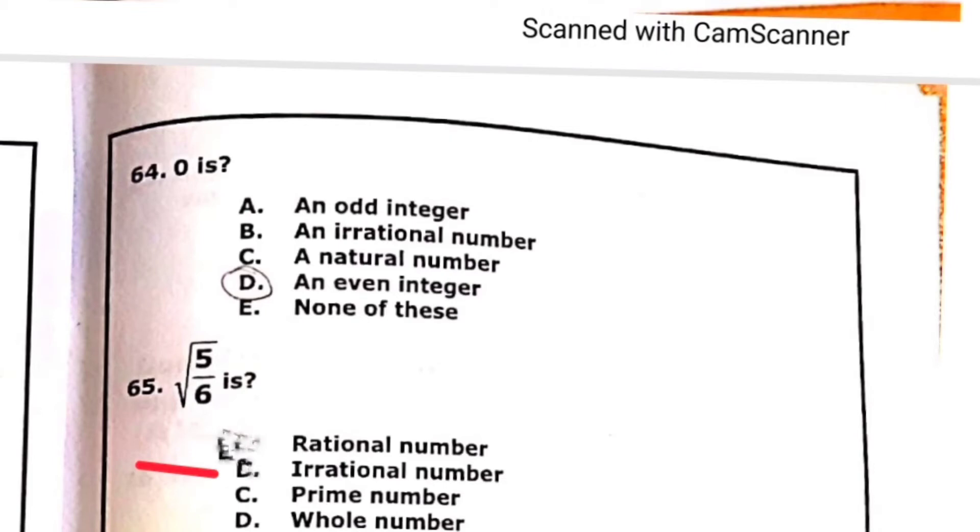65: 5 over 6 square root. Basically 5 over 6 is equal to 0.8333, but when we take the square root then it gives the answer irrational number.